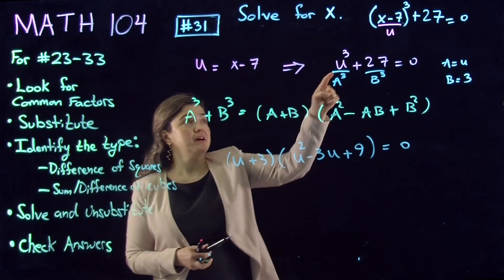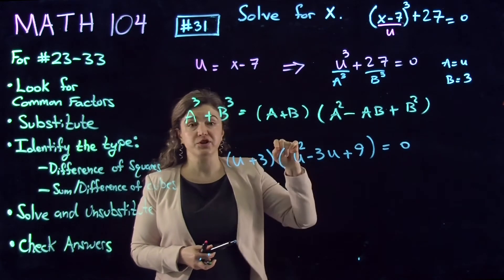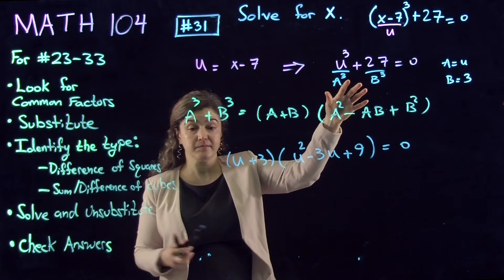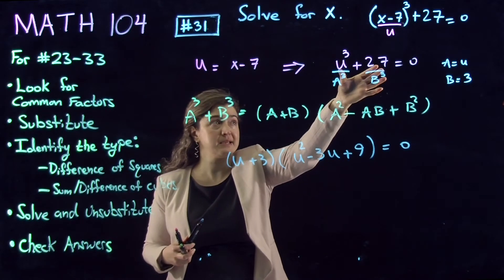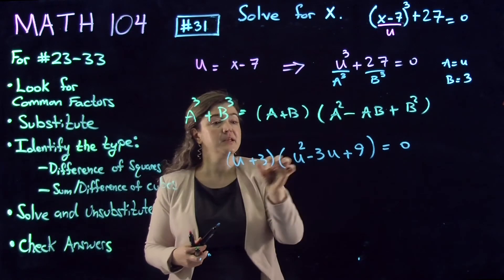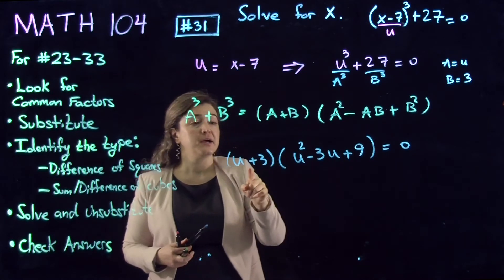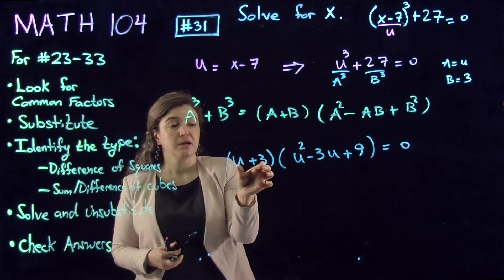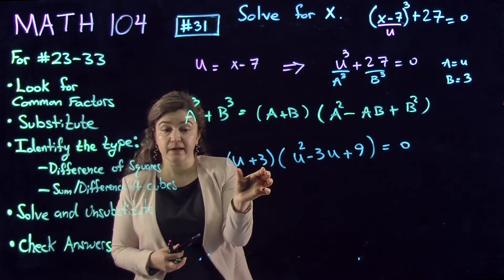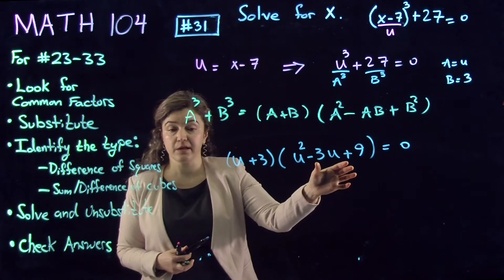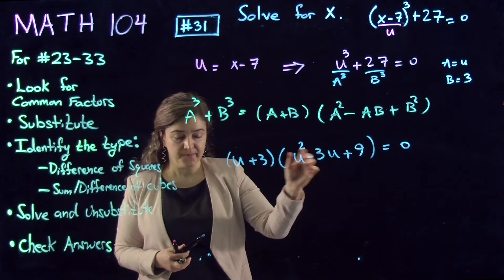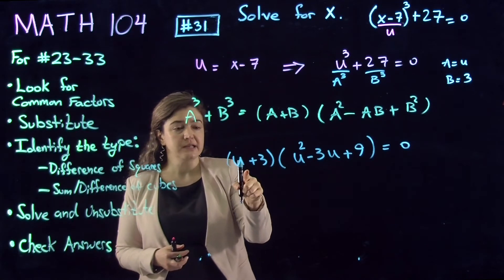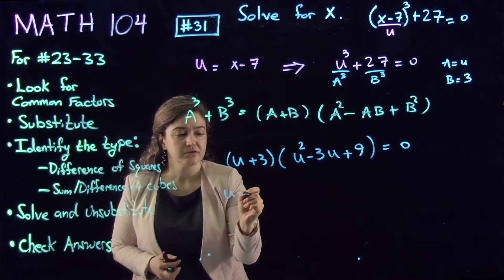Now that the polynomial has been factored into linear and quadratic, I can use the linear—it's easy to figure out—and the quadratic I can use the quadratic formula to solve. So the solution to the linear one is u = -3.